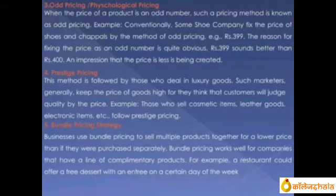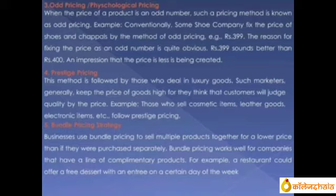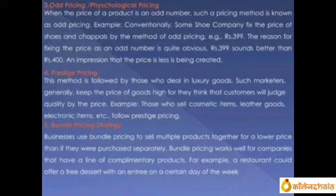Another form of bundle pricing is when you buy a Sunsilk shampoo and get a small conditioner free. Individually, the shampoo costs 100 rupees and the conditioner costs 70 rupees — a total of 170 rupees. But when bundled together in one box, they charge you only 140 rupees. You know you're saving 30 rupees, so you're pushed to buy both products at a lesser combined price. This is bundle pricing.